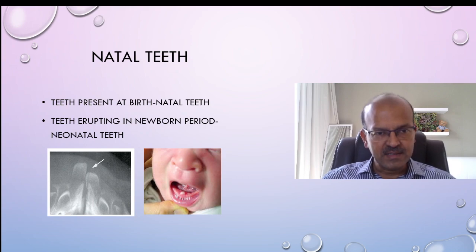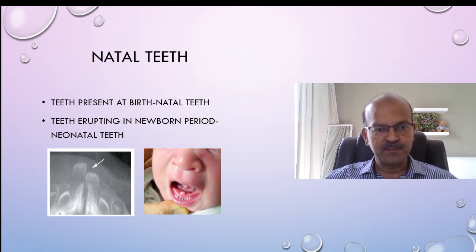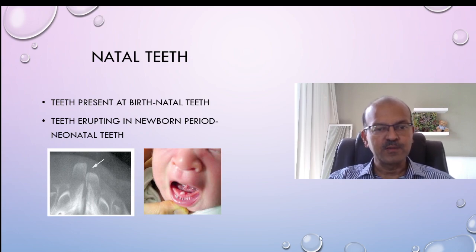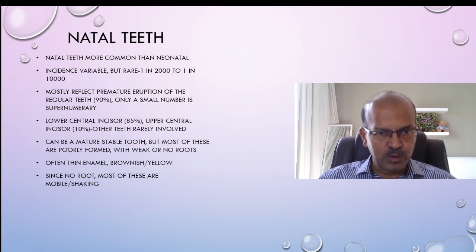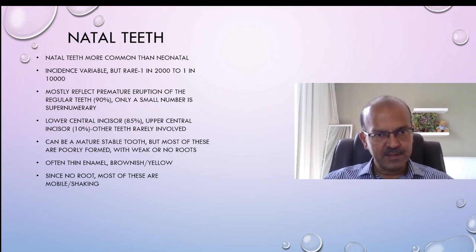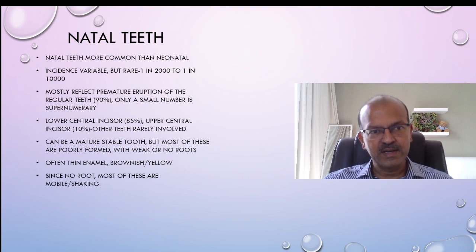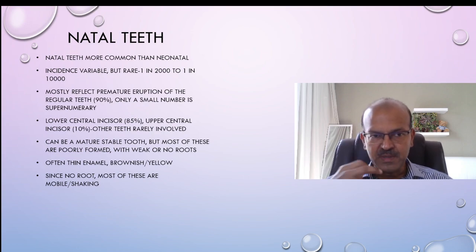Natal teeth are nothing but teeth that are present at birth, and sometimes they erupt in the newborn period — in the first 30 days — when we call them neonatal teeth, and these are examples. Some babies are born with teeth like this, usually in the lower incisor region, and this is an x-ray showing the actual teeth. Natal teeth are more common than neonatal, but even though relatively more common, the incidence is not very common — it's about one in two thousand to one in ten thousand.